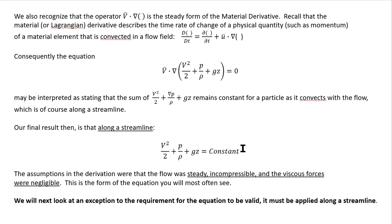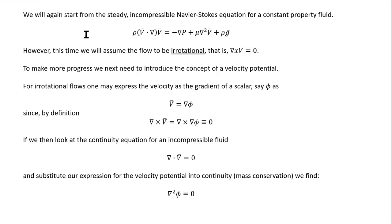That is the form most often seen, with the requirement that it's valid along a streamline. Next, we look at an exception to this streamline requirement, starting again from the incompressible Navier-Stokes equations for a constant property fluid.